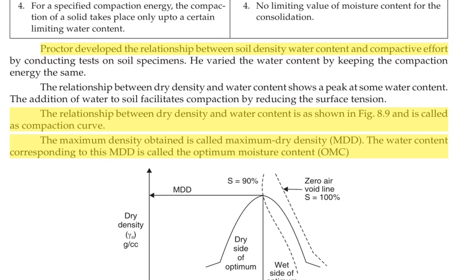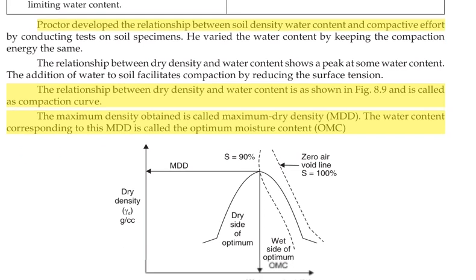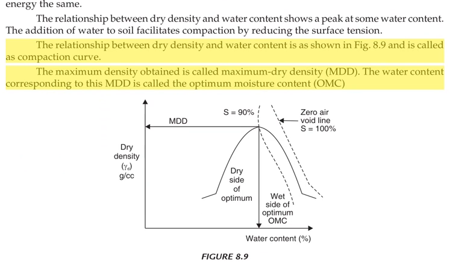Proctor developed the relationship between dry density and water content with compactive effort by conducting tests on soil specimens. The relationship between dry density and water content is shown in the compaction curve, where water content is taken as the x-axis and dry density as the y-axis. The maximum density obtained is called Maximum Dry Density (MDD), and the water content corresponding to this MDD is called the Optimum Moisture Content (OMC).